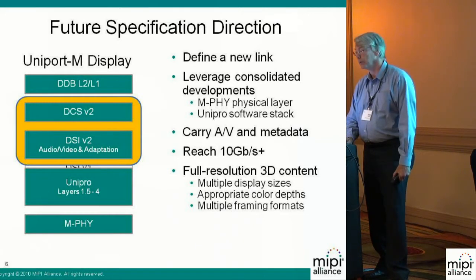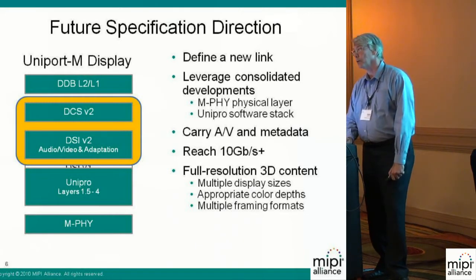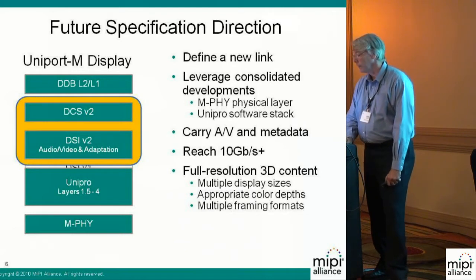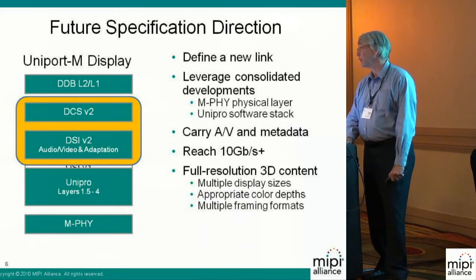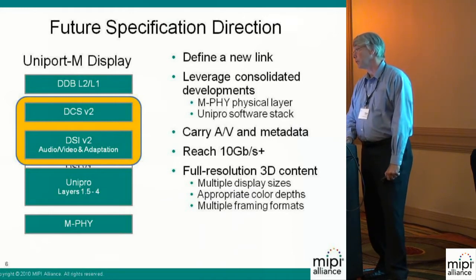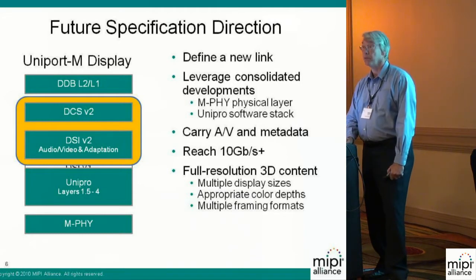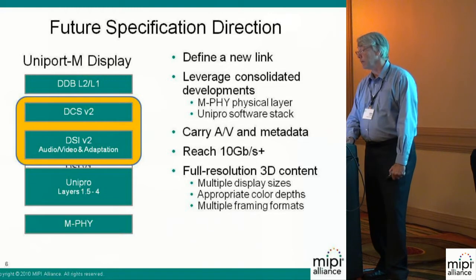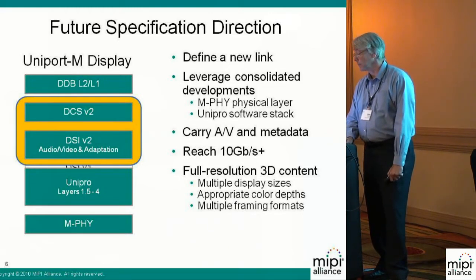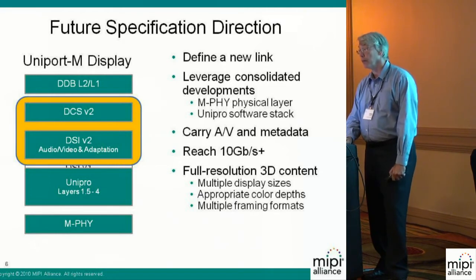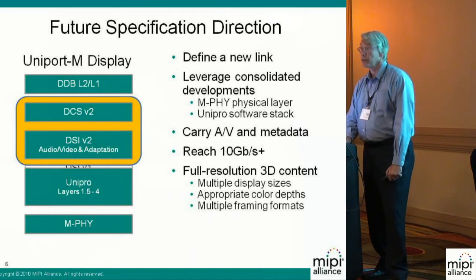You've heard from Ken Trotter about M5. There's also a Unicorn protocol and software stack. We want to take this link and do some new things with it. We want to carry audio and video, not just video. We want ancillary metadata that might now go to external displays. We want to look at reaching 10 gigabit and higher to support the new display content coming. And we want to have full resolution 3D and multiple display sizes and look at the appropriate frame formats.